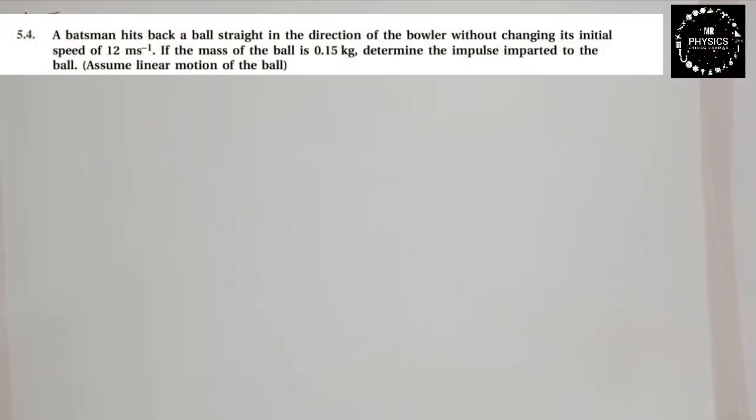Hello students, example 5.4: A batsman hits a ball straight in the direction of the bowler without changing its initial speed of 12 meters per second. If the mass of the ball is 0.15 kg, determine the impulse imparted to the ball.